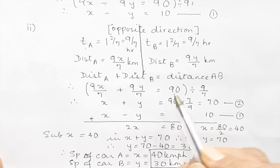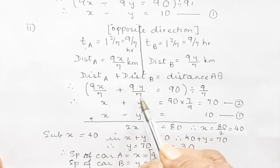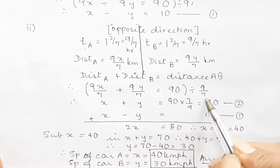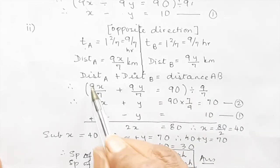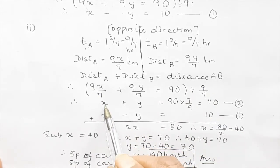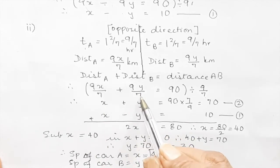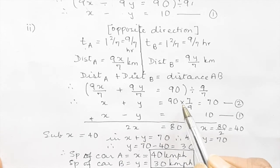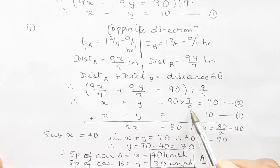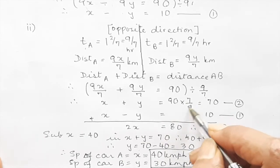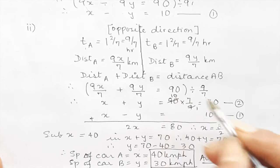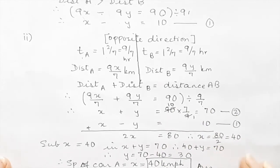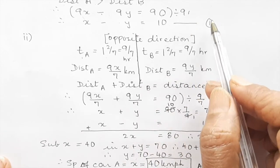Distance A plus distance B equals 90. Since 9/7 is a common factor, divide through by 9/7. The 9 and 7 cancel on both terms, leaving x plus y, and on the right side it becomes 90 multiplied by 7/9, giving 70. That is equation 2.